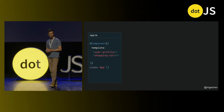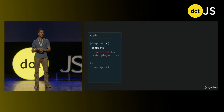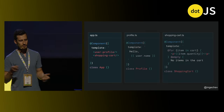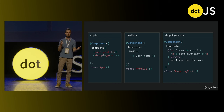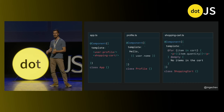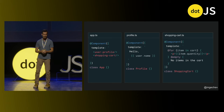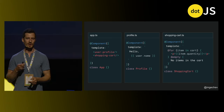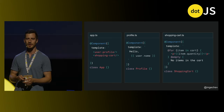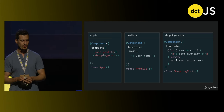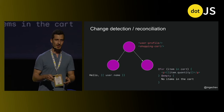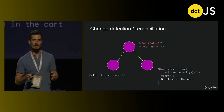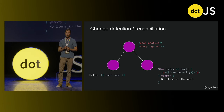Let's look at a more practical example. Here we have an app component that uses two other components: user profile and a shopping cart. Their implementations are pretty simple — the profile component just displays a user name, and the shopping cart component iterates over a collection of items and displays the quantity for each one. Under the hood, once you run your application, the framework builds a component tree with the app component at the top.